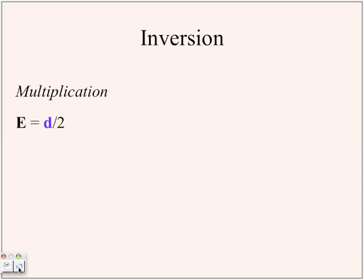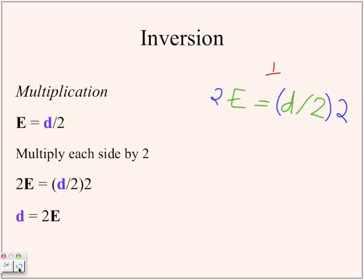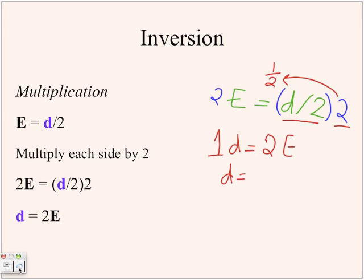In this equation, e equals d divided by 2, or one-half of d. So you're going to multiply each side by 2. Doing that cancels it out, because 2 times one-half equals 1. So it's like saying 1d equals 2e, or just d equals 2e.